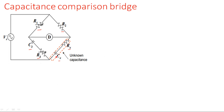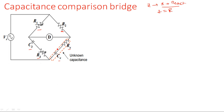When I explained AC bridges, I told you that instead of resistance we use impedance Z. Z is nothing but resistance plus reactance. It doesn't mean Z always consists of both — Z may be simply resistance, or it may be resistance plus reactance. At least one of these must be present. So Z1 is R1, Z2 is R2, Z3 is a resistance plus reactive component, and Z4 is also resistance plus a reactive component.